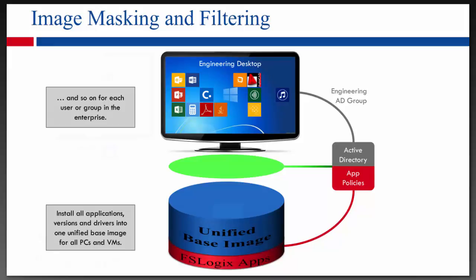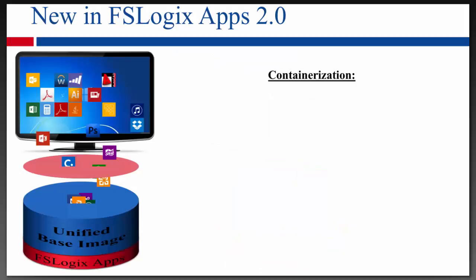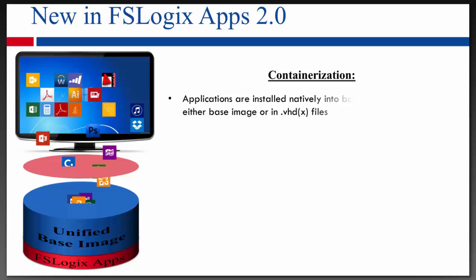With 2.0, we introduced app containerization. With app containerization, we can take the applications — they can be installed into the unified base image, or you can offload the install of those applications to a VHD or VHDX file. The VHD or VHDX file depends on which operating system you're using — Windows 7 versus Windows 8 or higher. You install the applications like normal. There's no sequencing or packaging needed, no extra tools.